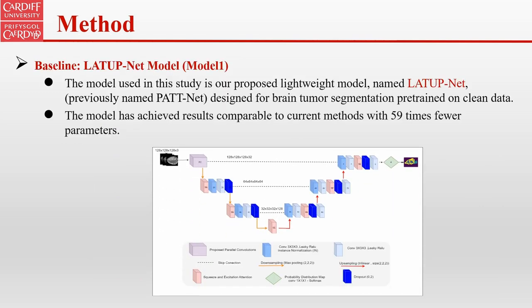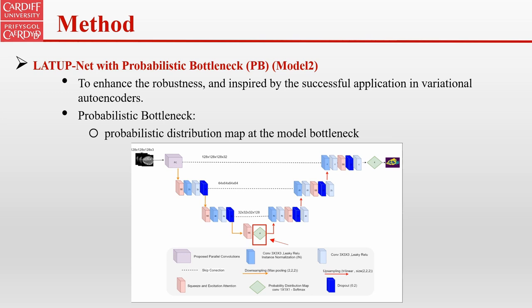This study compares the robustness of our Lite-Net model for brain tumor segmentation with and without incorporating a probabilistic bottleneck. As a baseline, we tested our proposed lightweight deep learning model, especially designed for brain tumor segmentation. This model achieved results comparable to current state-of-the-art with 59 times fewer parameters. To enhance segmentation accuracy and model robustness, we proposed adding a probabilistic distribution map at the bottleneck, which allows the model to capture and utilize uncertain or ambiguous features arising from differences in imaging protocols and imaging artifacts.